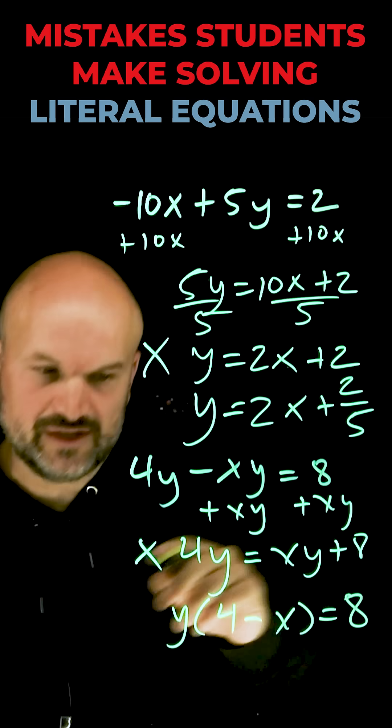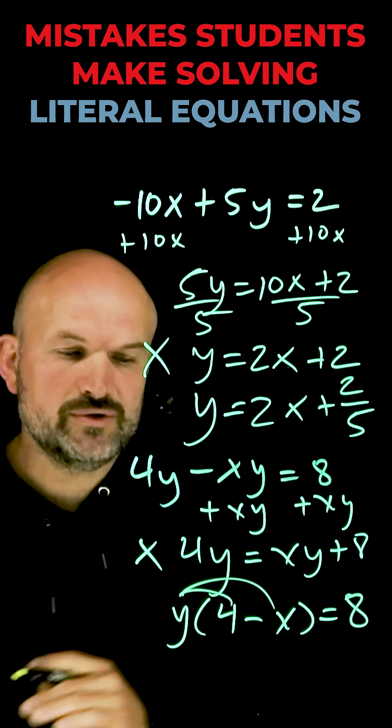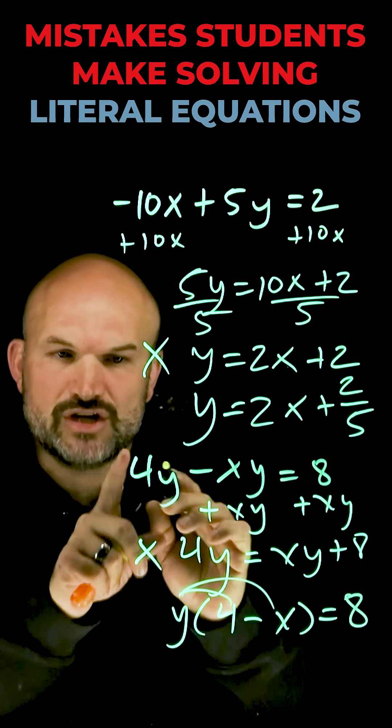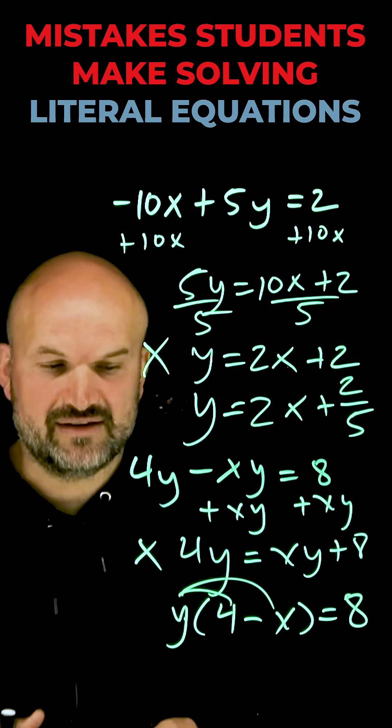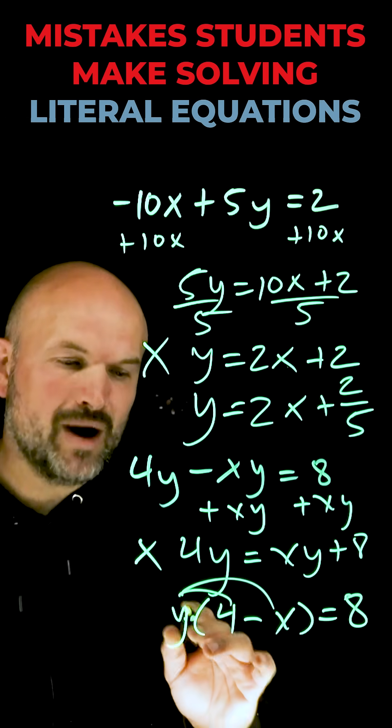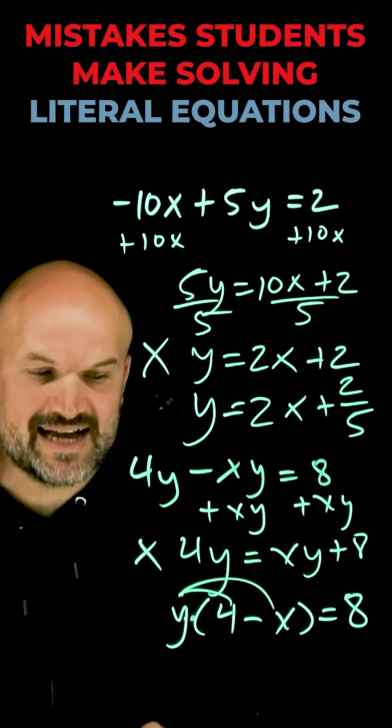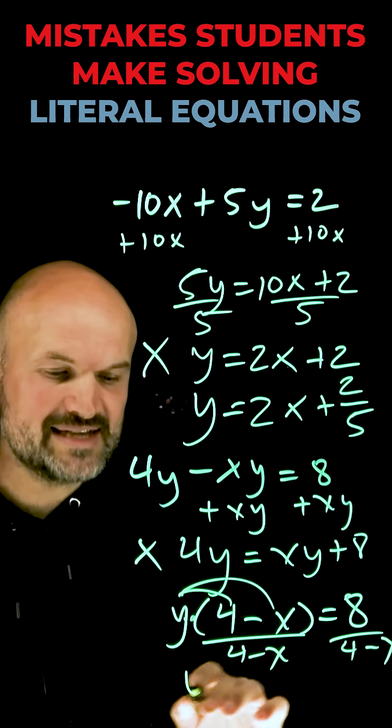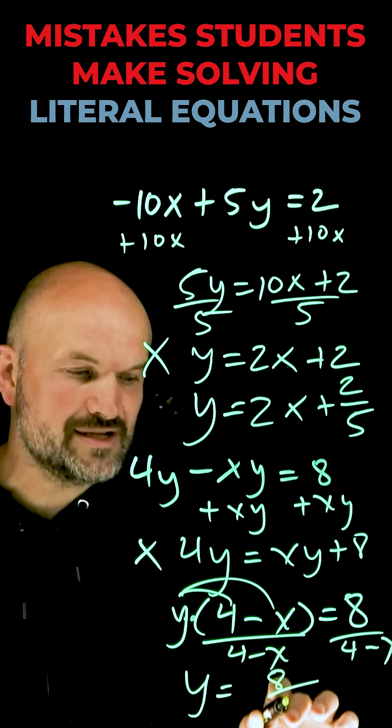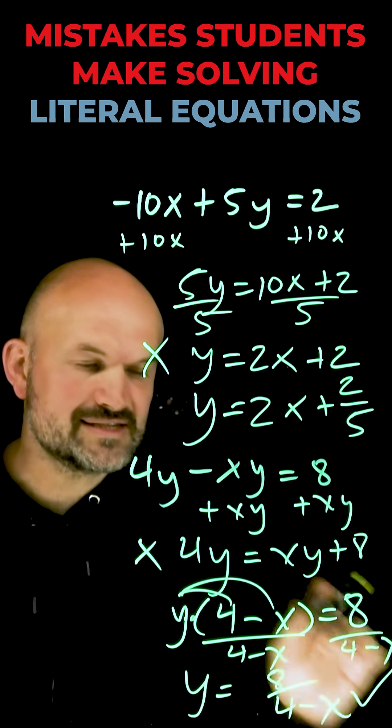Now I know students still get confused with this so just remember you can always multiply that y back to check your work. Y times 4 is 4y, y times negative x is a negative xy. But now since I have y times this expression 4 minus x, all I need to do to solve for y is just divide by the expression 4 minus x and I get y equals 8 over 4 minus x.